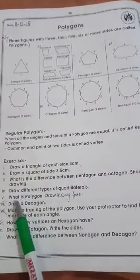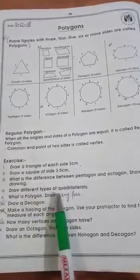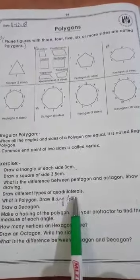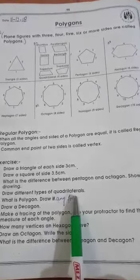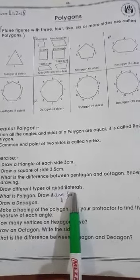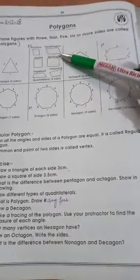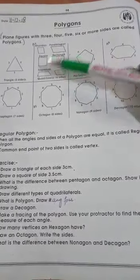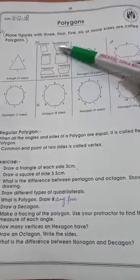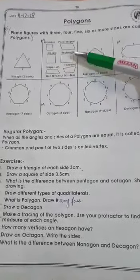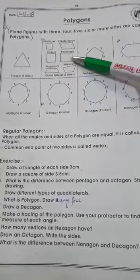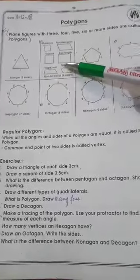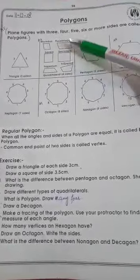Question number 4 is: draw different types of quadrilaterals. We have already learned what quadrilaterals are — they are four-sided figures. In the second column, six figures are given. You have to draw all these six figures in your copy on the blank page.